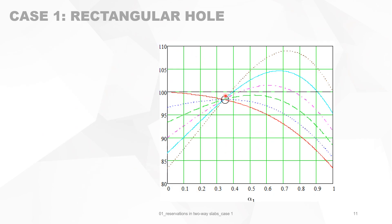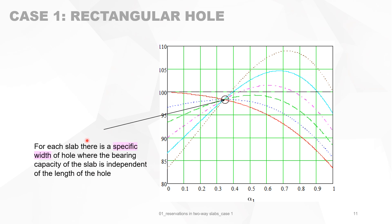There is a special point where all curves converge. This means that for each slab, there is a specific hole width (alpha_1) for which the bearing capacity is independent of the hole length. For Case 1, if you make a hole with its smallest dimension equal to approximately 0.35 times the smallest slab dimension, you can make it as long as you like and the bearing capacity will not change.